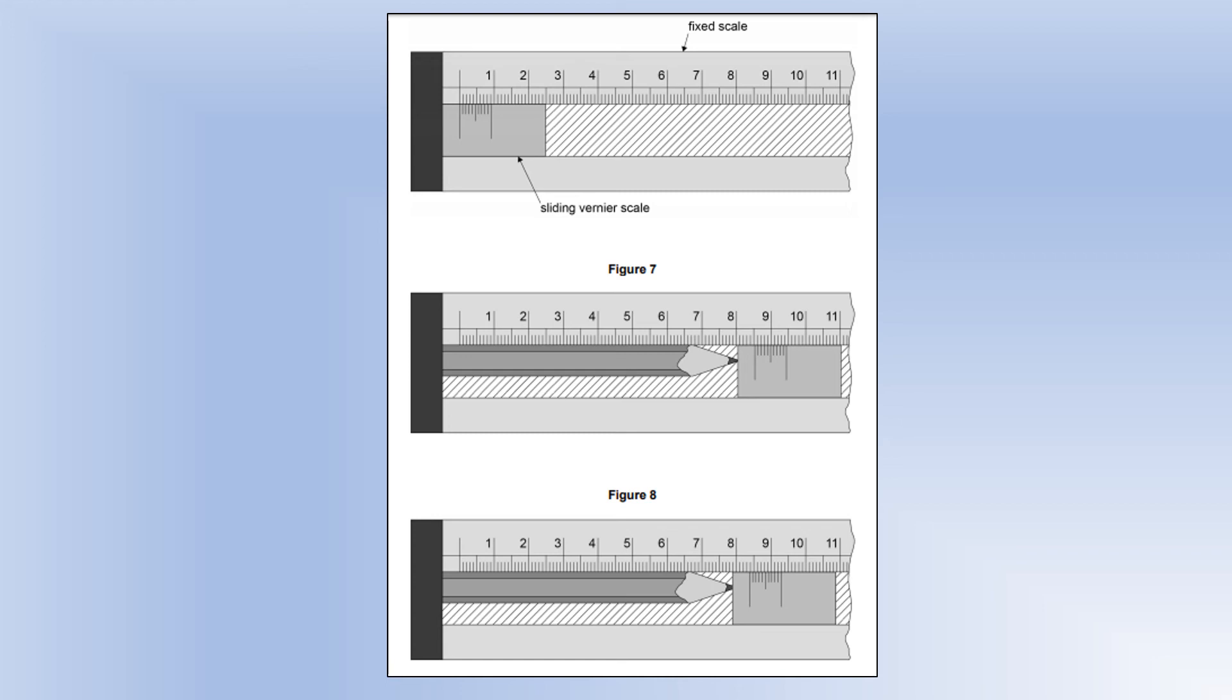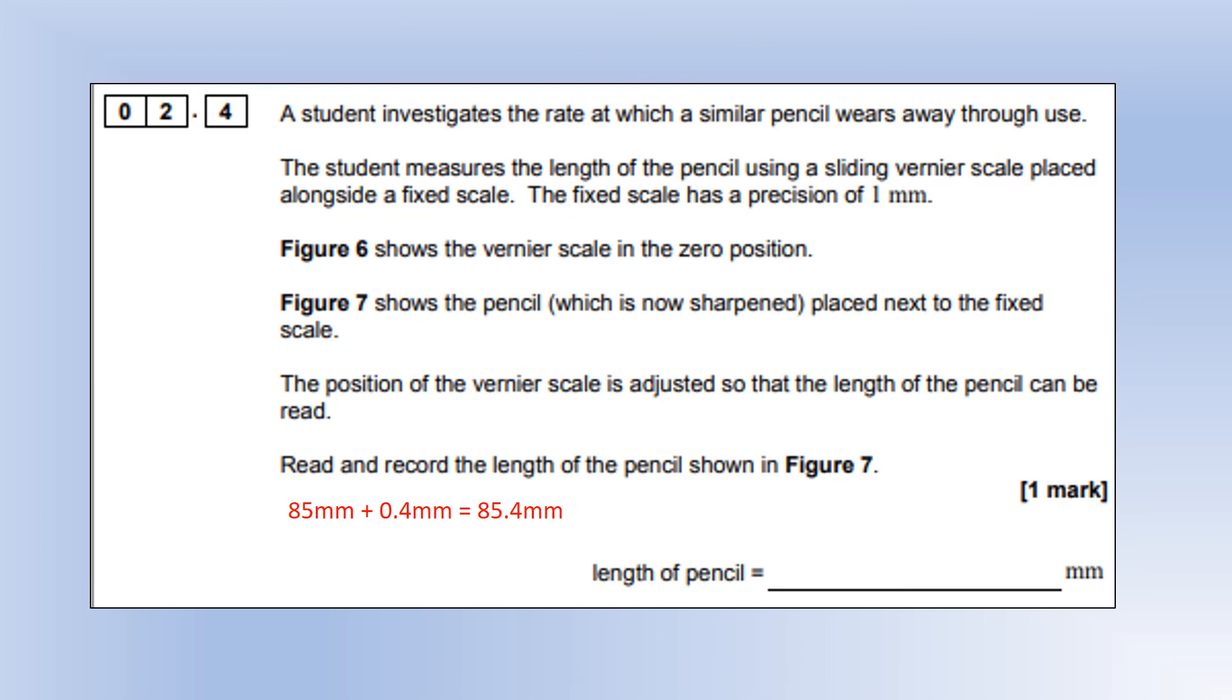Then we're looking for where the lines best match up. On this one, the fourth division on the vernier scale best matches up the main scale, meaning it's a length of 85.4 millimeters.